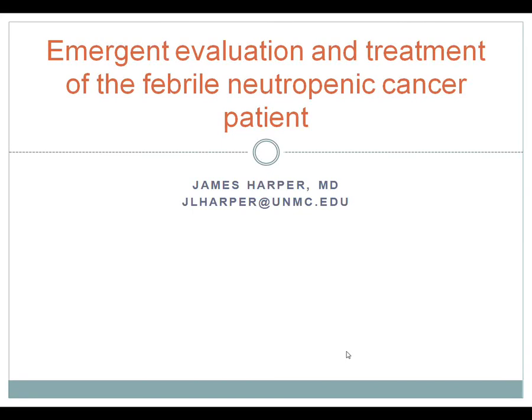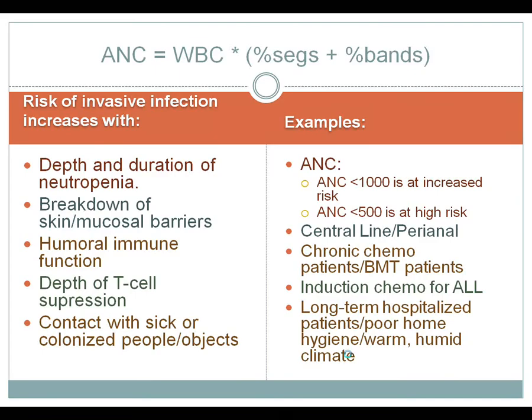Today we're going to talk about neutropenia and fever in cancer patients. Neutropenia is defined as the absolute neutrophil count. ANC is calculated by multiplying the total white blood cell count by the combined percentage of segs and bands.